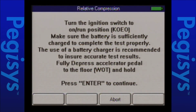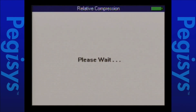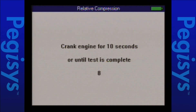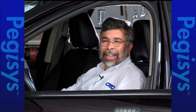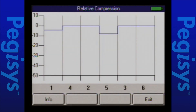Then I'm going to press enter. Once it gets ready to start the test, it'll show me a timer to start cranking for 10 seconds. So I'm going to press enter. Up will come my instructions — it says crank for 10 seconds. You'll notice it's counting down: nine, eight, seven, six, five. And we'll be done in just a second. Two, one, and we're done.